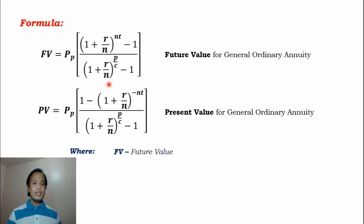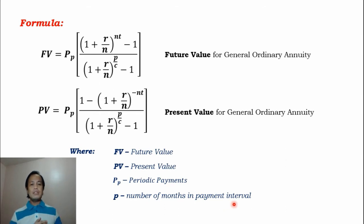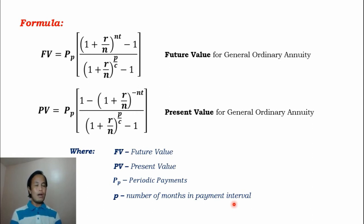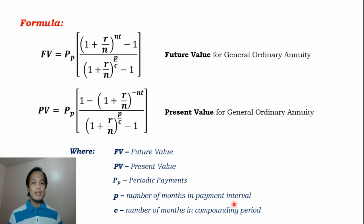From this formula, FV is for the future value, PV is for the present value, and PP is the periodic payment. We have an additional component P, which is the number of months in the payment interval. For example, if a loan is paid semi-annually — meaning twice a year — the number of months in that payment interval is six. If the payment interval is quarterly, the number of months is three, because you pay four times a year.